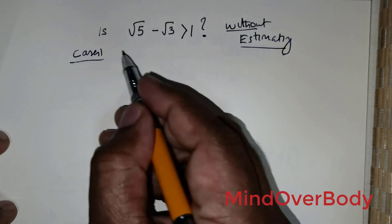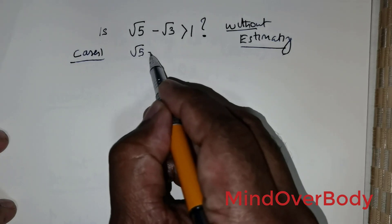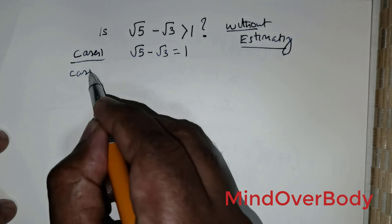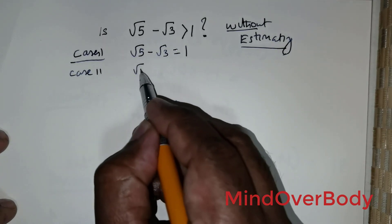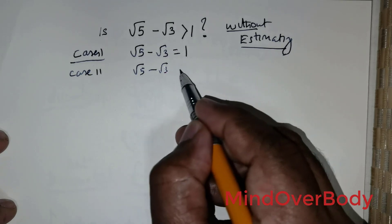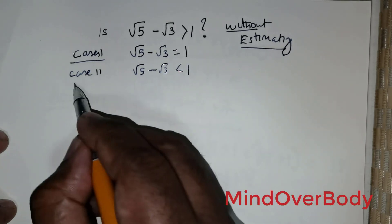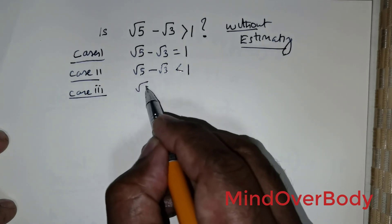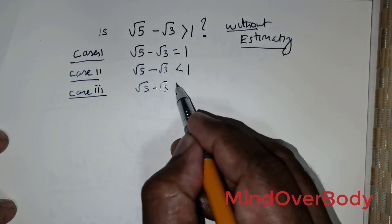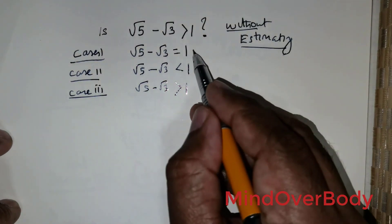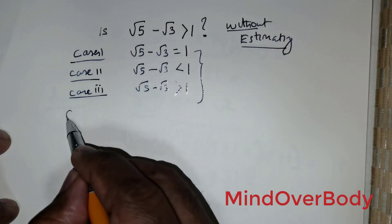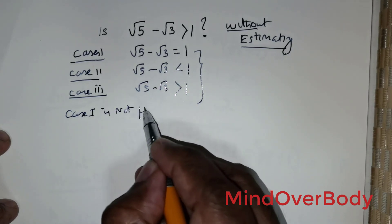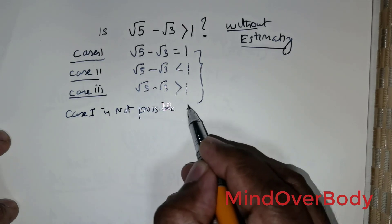There are three cases possible for this question. Case 1: root of 5 minus root of 3 equals 1. Case 2: root of 5 minus root of 3 is less than 1. Case 3: root of 5 minus root of 3 is greater than 1.